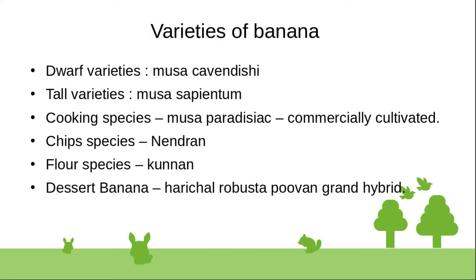Varieties of banana include: dwarf varieties such as Musa cavendishii; tall variety Musa sapientum; cooking species Musa paradisica, which is commercially cultivated; rain forest species; desert banana; and grand hybrid varieties such as Poovan and Robusta.